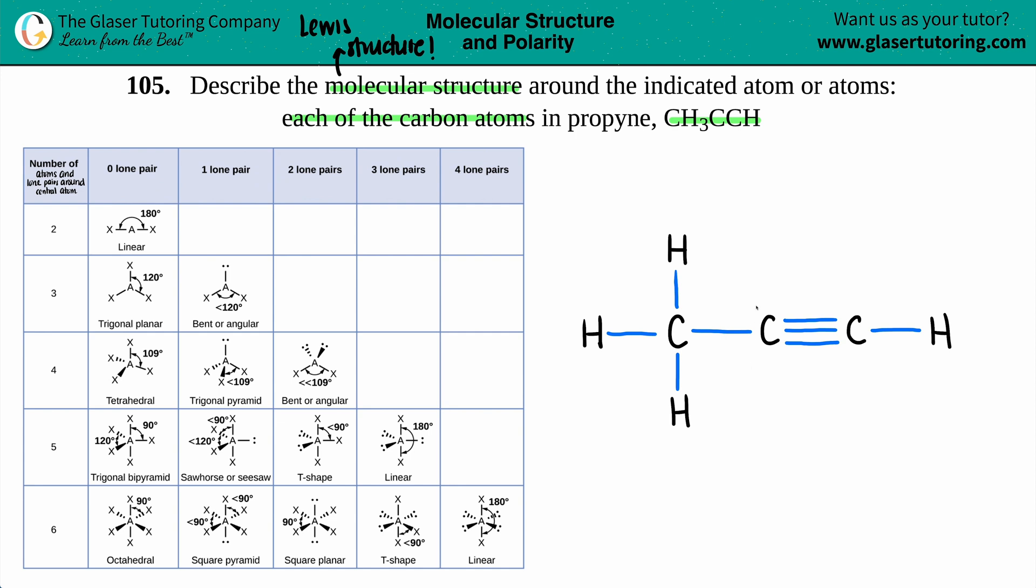Now we're going to use this Lewis structure to find out the molecular structure or the molecular geometry, and we're going to use this chart. Now your teacher or professor may give these to you on a test or quiz, but if you have a professor or a teacher like I did, we had to memorize them. So use flashcards, do what you got to do to just make sure that you memorize the names of your structures that go with the categories. But we'll use this to kind of guide as to what the structures are.